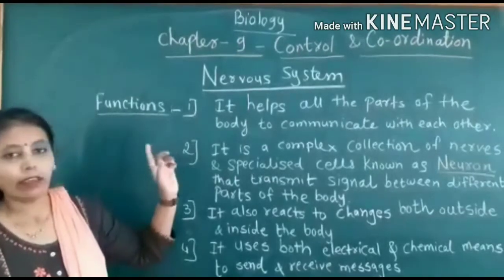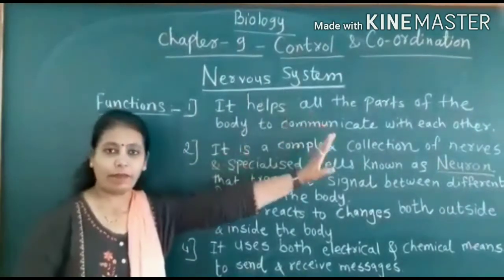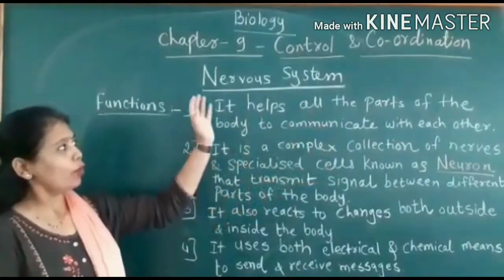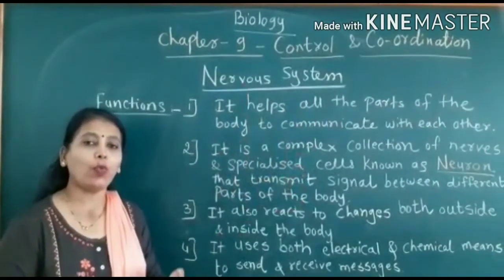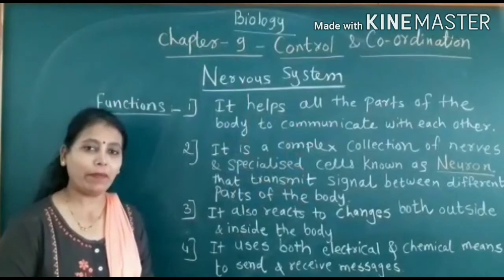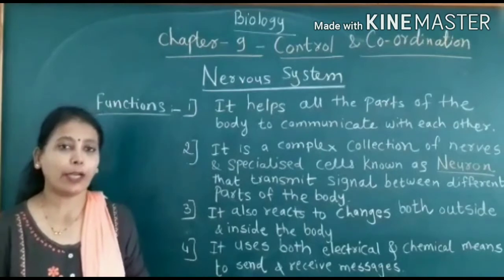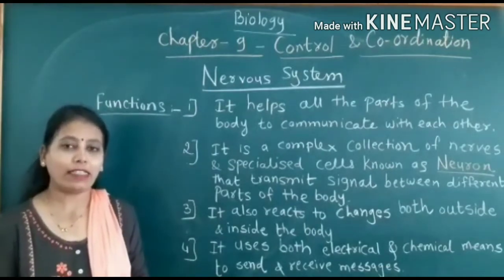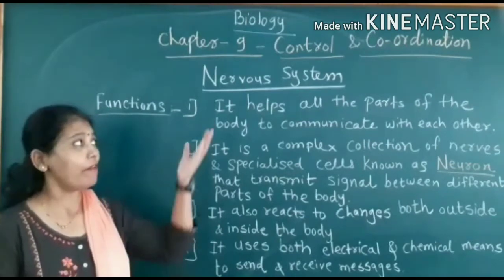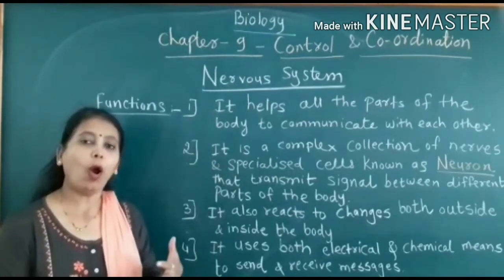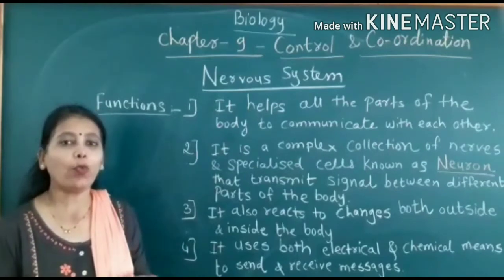Hello everyone. Today we are going to study the functions of the nervous system. The nervous system is one of the systems present in human beings. There are many types of systems — for example, we have circulatory system, digestive system, respiratory system, reproductive system, and nervous system. All these systems are inter-connected with each other.